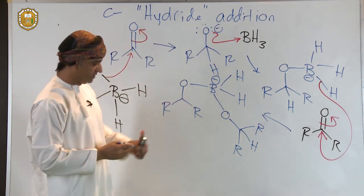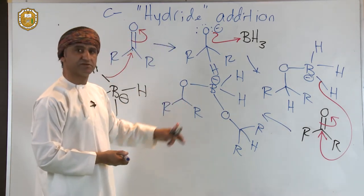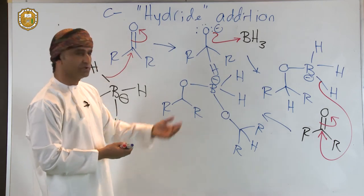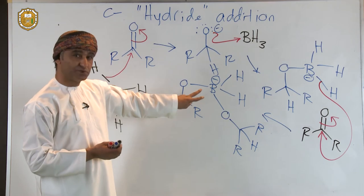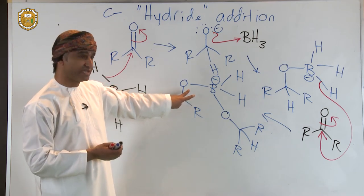If you notice, we have written this intermediate straight away. We did not go through the alkoxide because that's understood. Now, if you notice here, two reductions have actually taken place. Two hydride transfers or two hydride nucleophilic attacks have taken place.